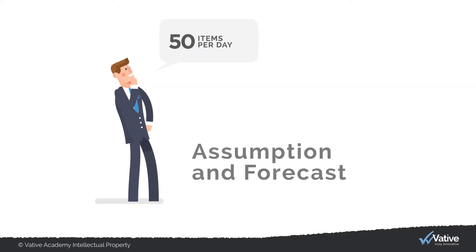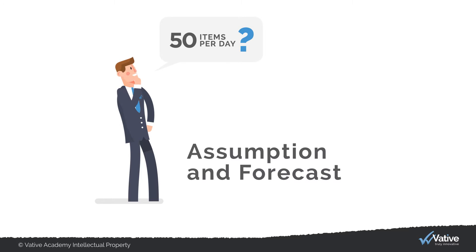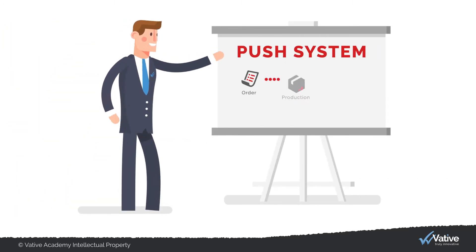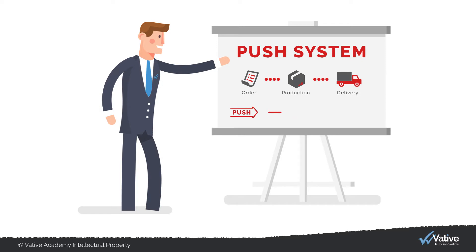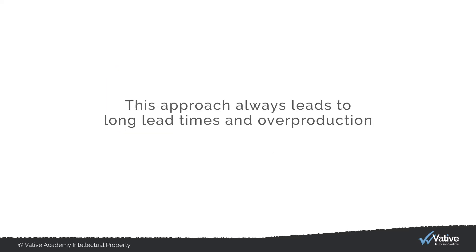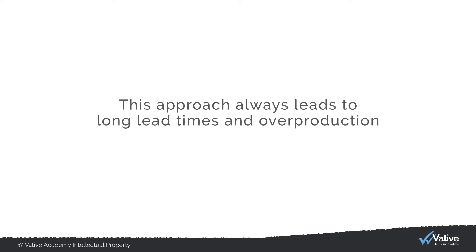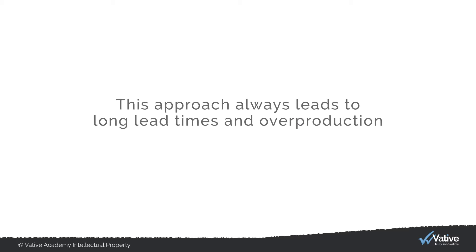In a push system we produce based on an assumption and forecast. We trigger supply at the first process and push the product through the value stream to the customer. This approach always leads to long lead times and overproduction.